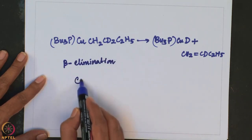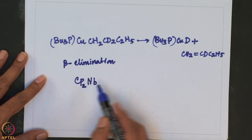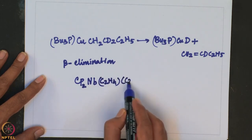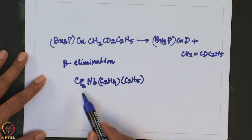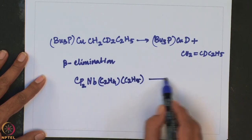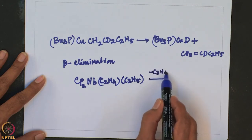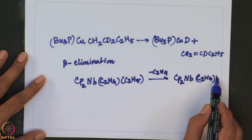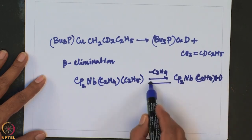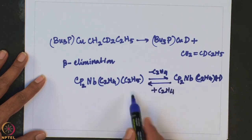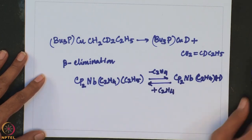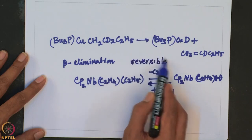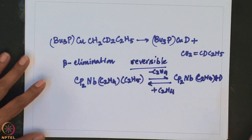An example of reversibility: consider cyclopentadienyl niobium having an ethylene group as well as an ethyl group — the Cp2Nb(C2H4)(ethyl) complex. On heating, it loses C2H4 to form Cp2Nb(C2H5) with a hydride bond. On addition of ethylene, one can regenerate the ethyl and ethylene complex. This shows that these reactions can be made reversible, and they are very useful in catalytic organic transformations.